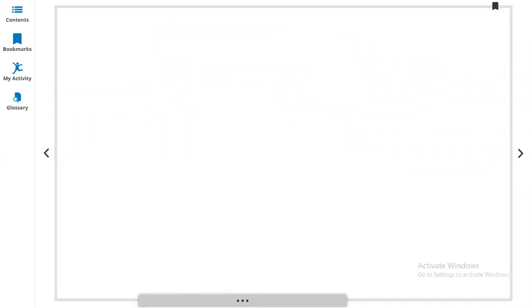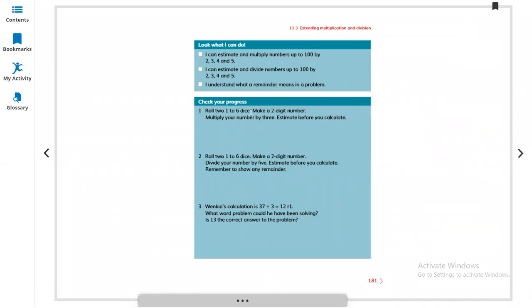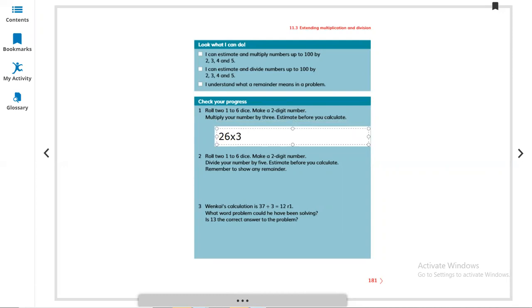Let's move to the next. After this, check your progress. Roll 2 dice, 1 and 6 dice. Make a 2-digit number. For example, we make it: 2 coming and 6 coming. Multiply your number by 3. 26 multiplied by 3. So we need to make in parts: 20 multiplied by 3 and 6 multiplied by 3. So 20 multiplied by 3 equals what? 6 multiplied by 3 is 18 and 20 multiplied by 2 is 60. So 60 plus 18 equals 78. Easy.